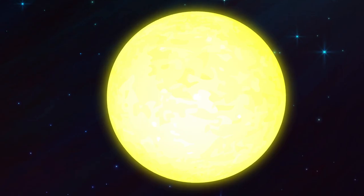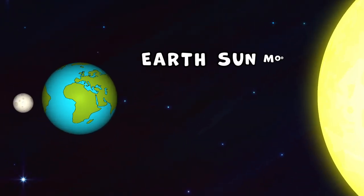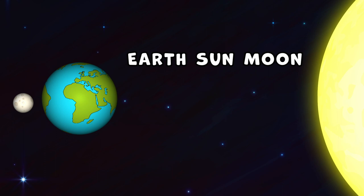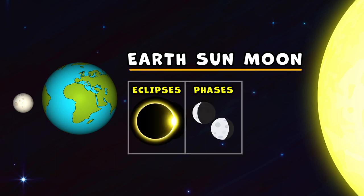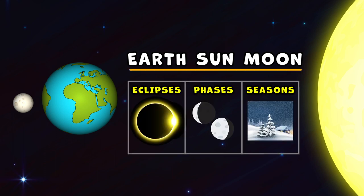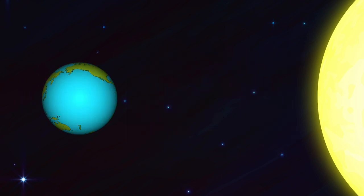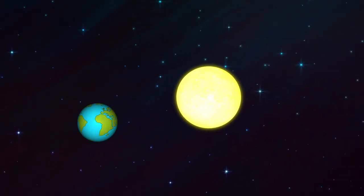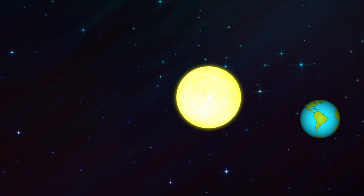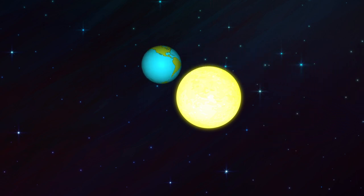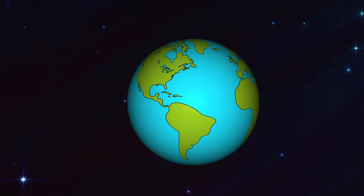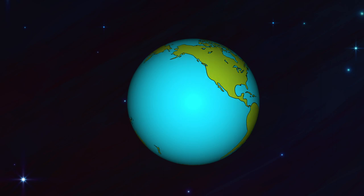Welcome boys and girls. Today we're going to explore the Earth-Sun-Moon system and how they interact to create eclipses, lunar phases, and the seasons here on Earth. In this first video, we will look at how the Earth's rotation and its orbit around the Sun creates seasons. And to help us learn, let's bring in our old friend Allie the Alien.